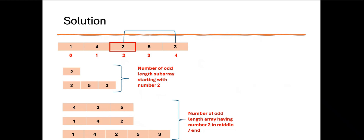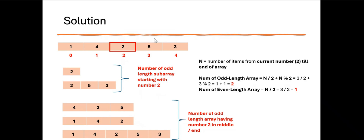We need to get only odd length subarrays, so the formula is: number of odd length subarrays = n divided by 2 plus n modulo 2, where n is the number of elements from the current element to the end. For the number 2 with n=3: 3/2 + 3%2 = 1 + 1 = 2. The number of odd length subarrays starting with 2 is 2. The number of even length subarrays is n divided by 2 = 3/2 = 1.